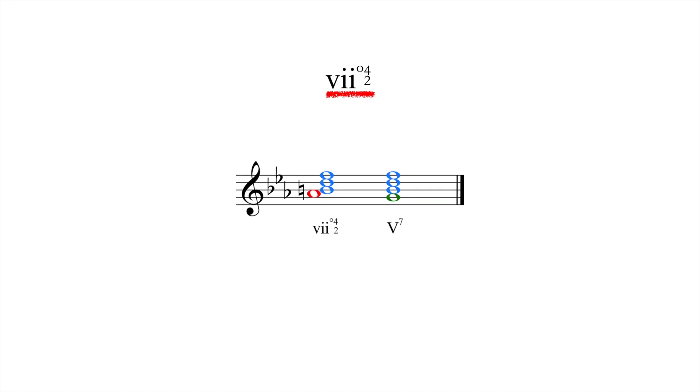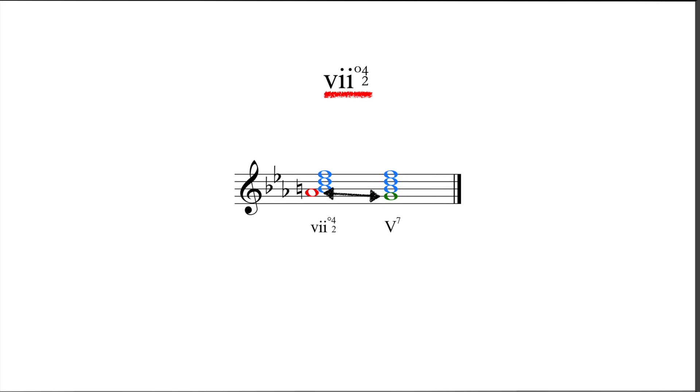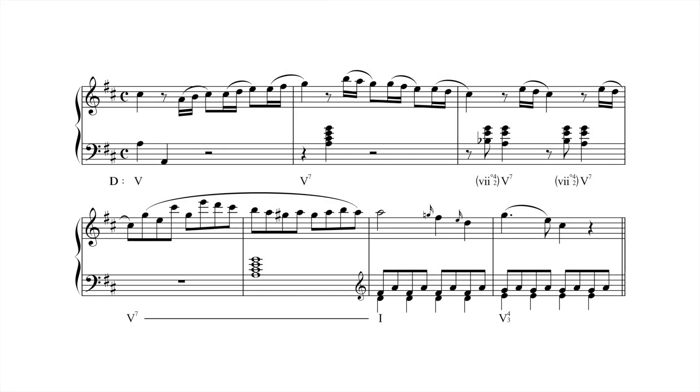vii°4/2 does not share a bass note with any position of V7 and is used primarily to intensify a root position dominant by oscillating between scale degrees 5 and 6 in the bass, as in this example from Mozart's Rondo in D.